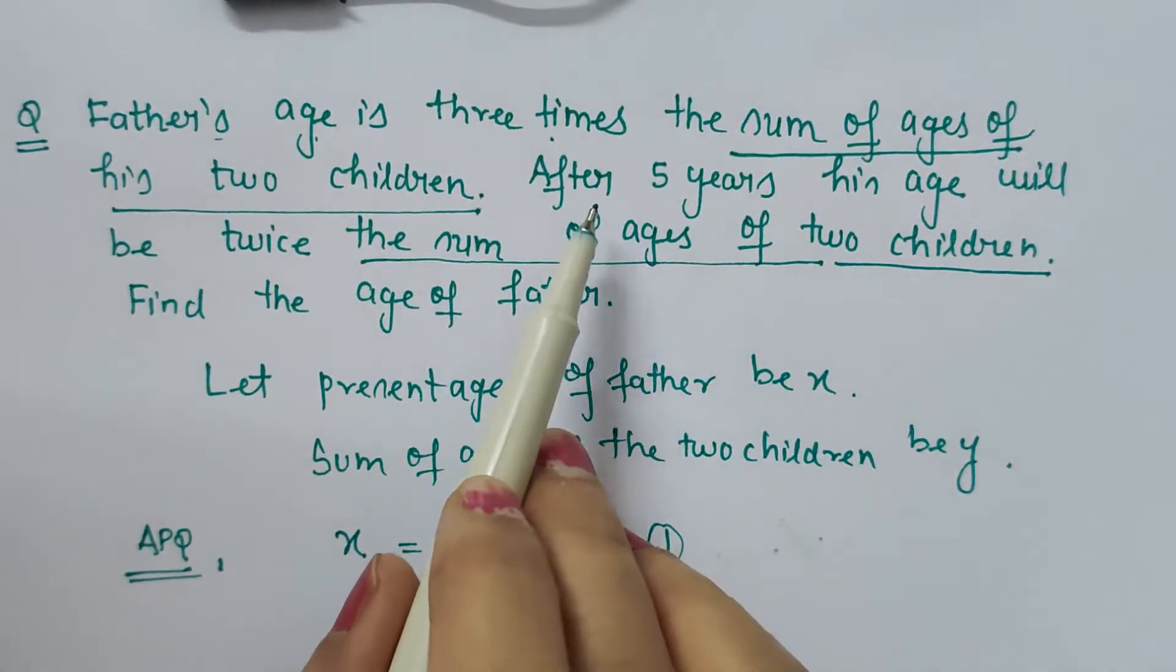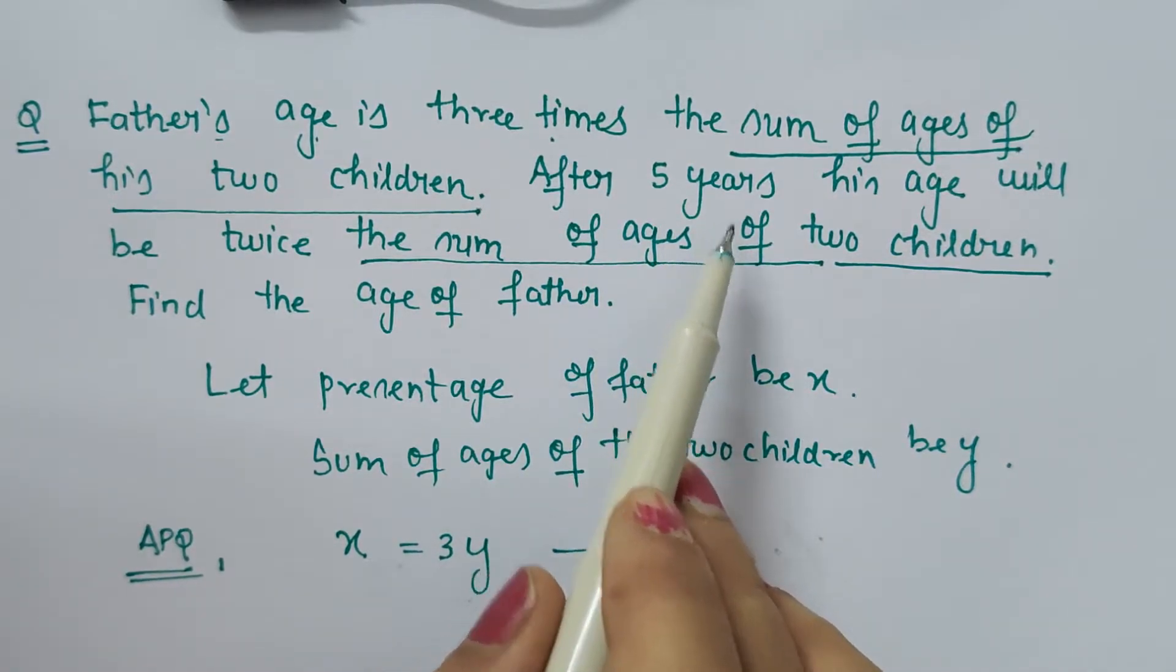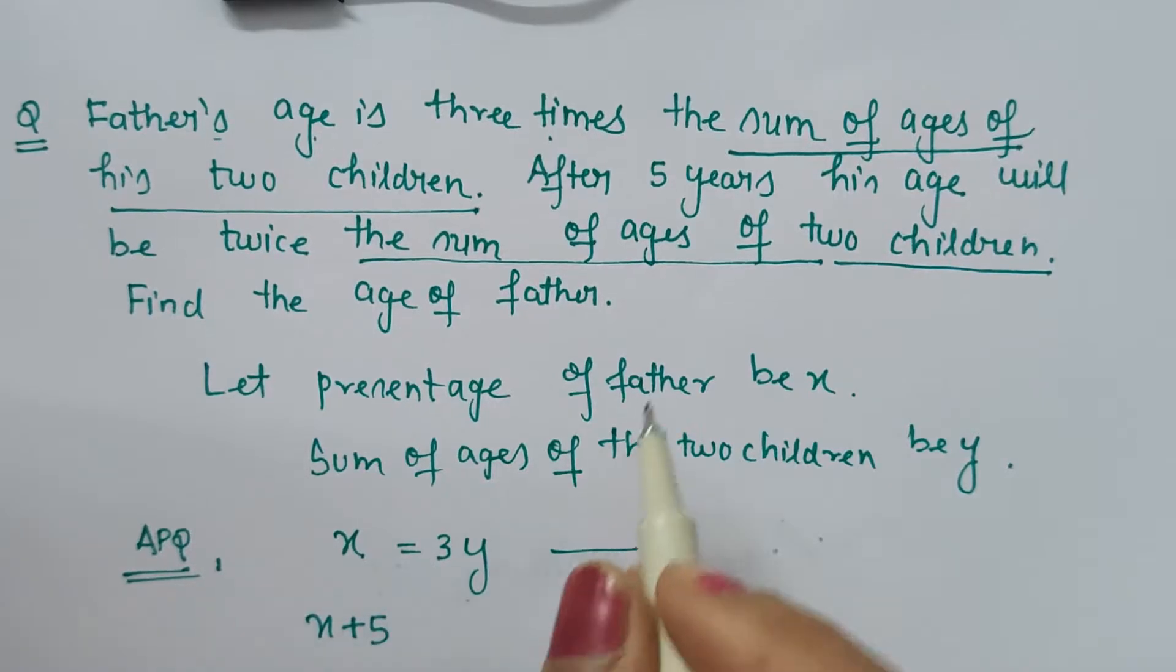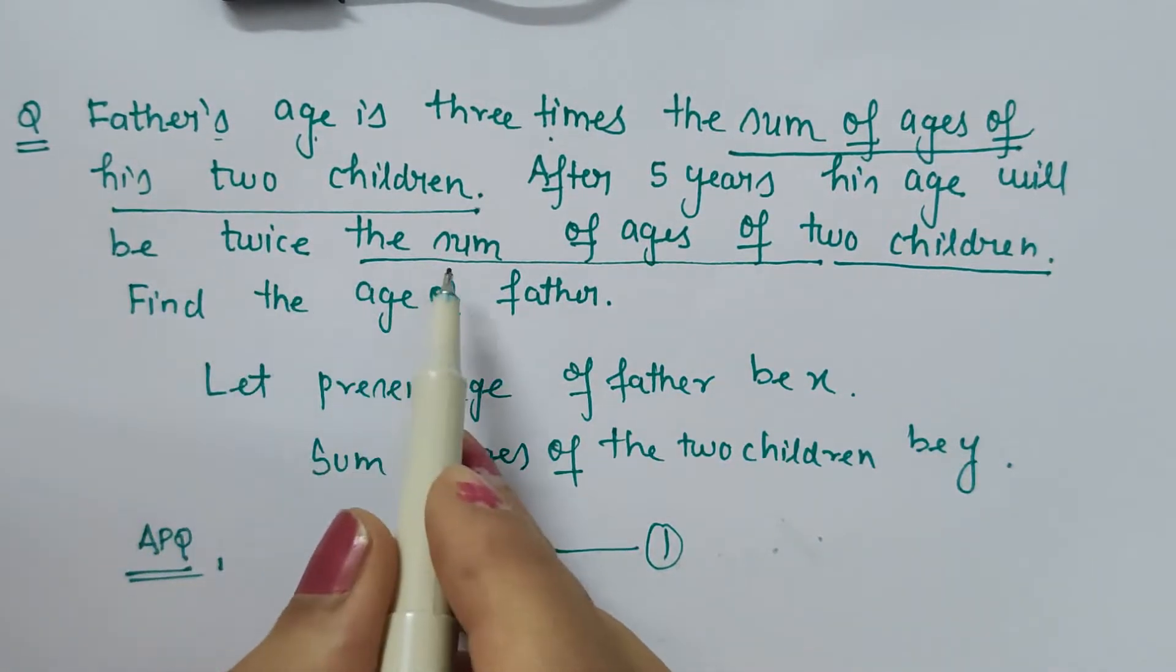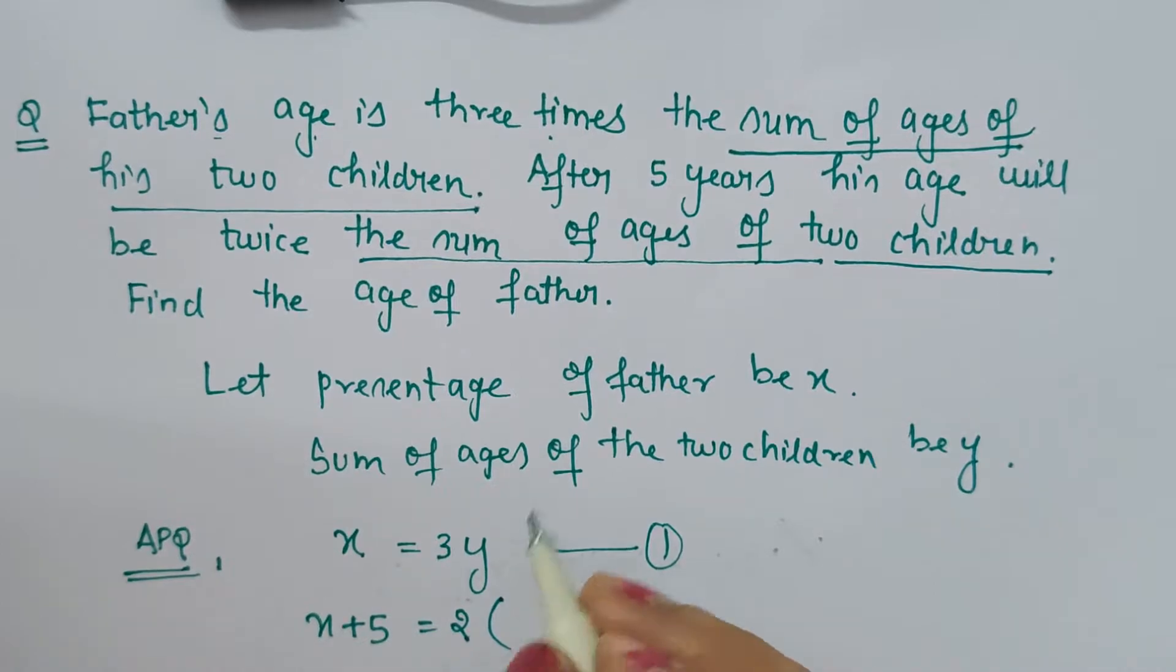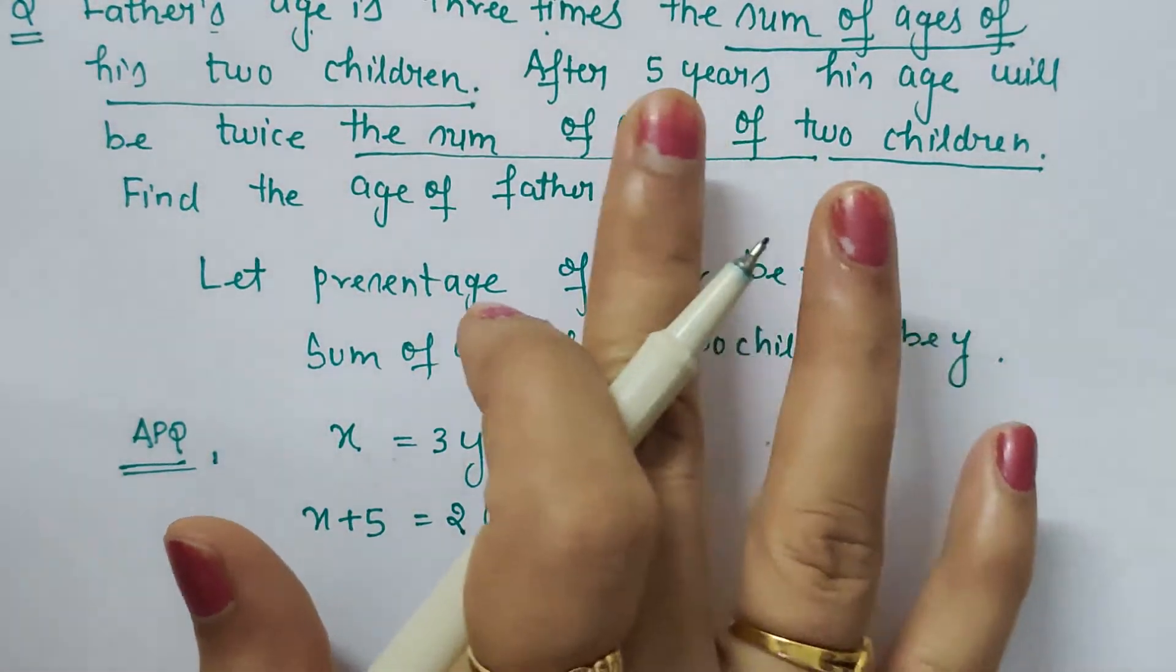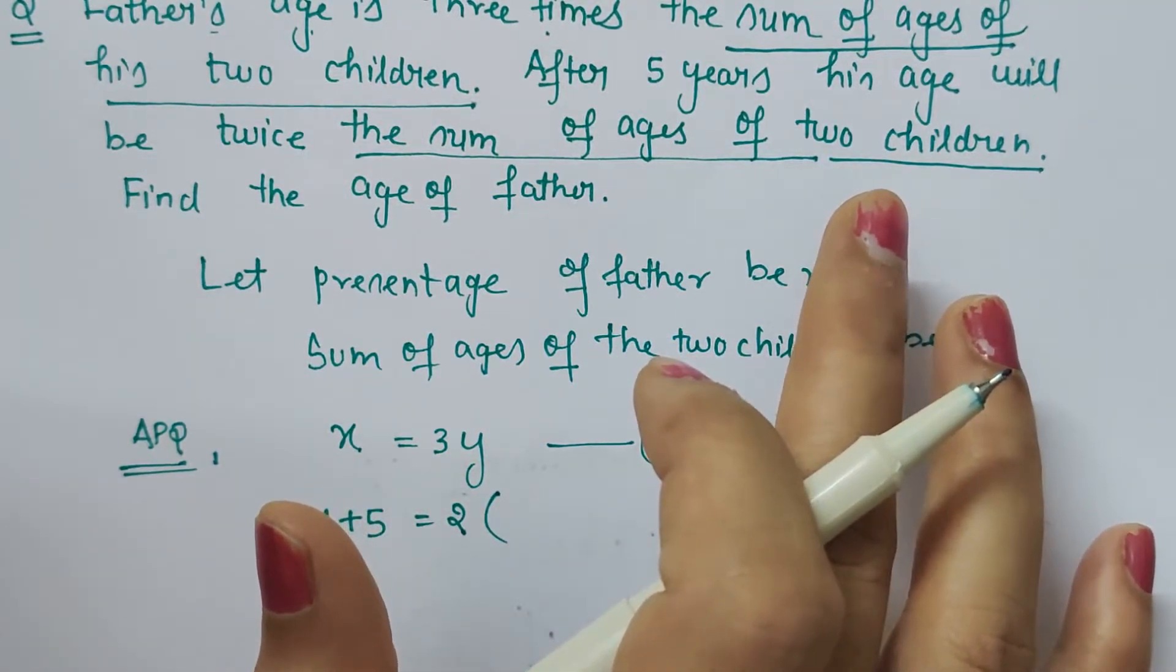Now after reading the second line, what does it say? After five years. So after five years, what will be the father's age? x + 5. After five years, his age will be twice the sum of ages of the two children. Twice means we are multiplying by two. After five years, the children's ages will also get added with five.